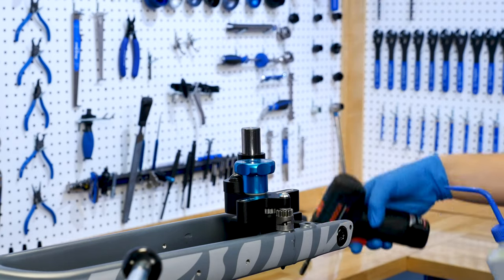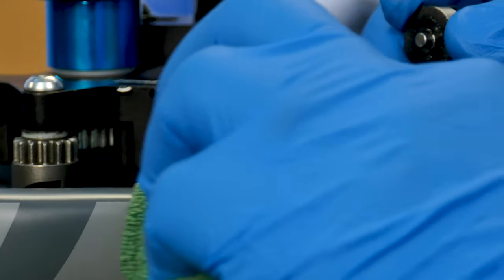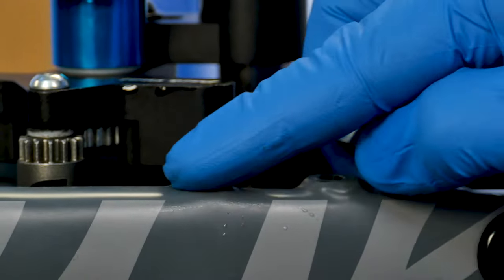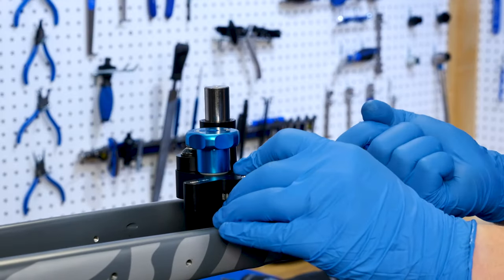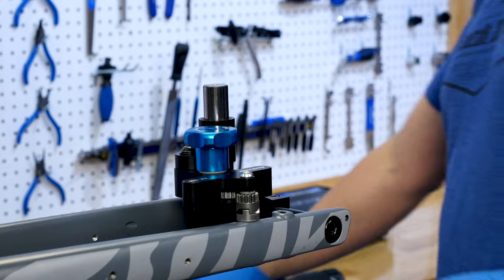To avoid removing too much material, be sure to stop and check your work frequently. Once a consistent surface is seen, set the stop on the DT5.2 and continue on to the next boss.